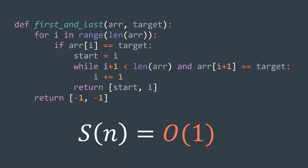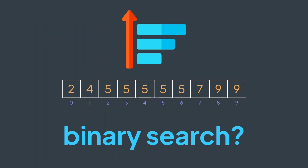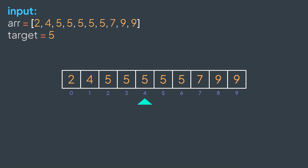This solution uses linear search, which gave an O(n) time complexity. But the array is sorted, so we can think of using binary search. Let's try to use binary search to find the start position. With binary search, we can find the position of an element in a sorted array. But here, we're not searching for any position of target — we're searching for the first one.